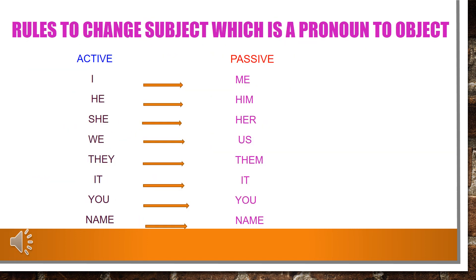Rules to change a subject which is a pronoun to an object in passive voice: the subjects in active voice — he, she, I, we, you, they, and names — must be changed when used as objects in passive voice. 'I' changes to 'me'; 'he' changes to 'him'; 'she' changes to 'her'; 'we' changes to 'us'; 'they' changes to 'them'. 'It', 'you', and names remain unchanged in passive voice.